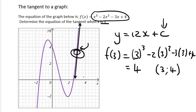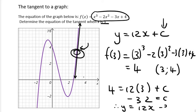We can plug that into the straight line's equation. So y will be 4, x will be 3, and if you work that out you get c = -32. Therefore the equation of the tangent will be y = 12x - 32.